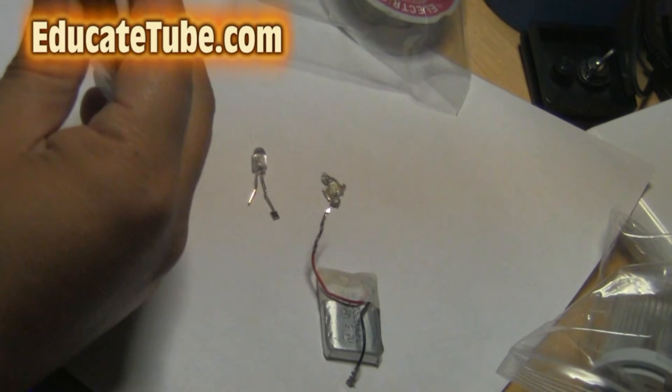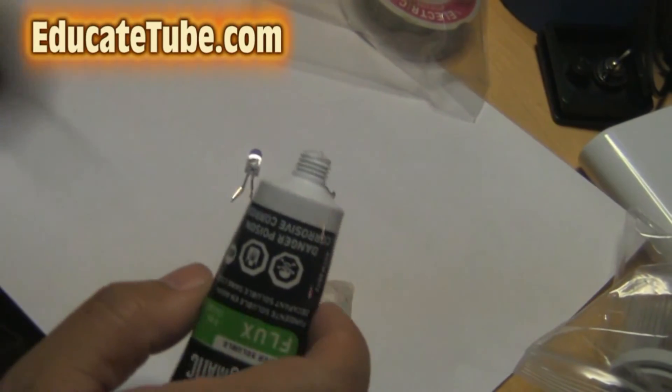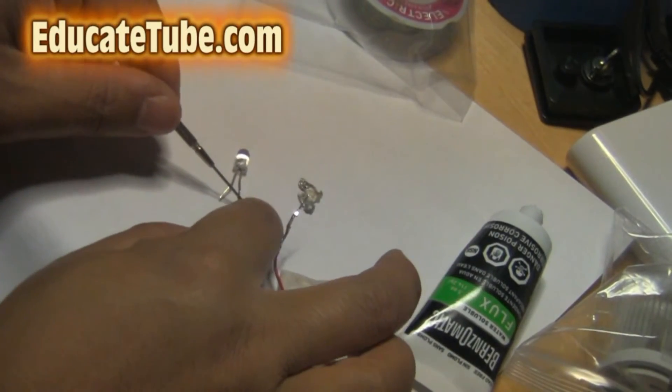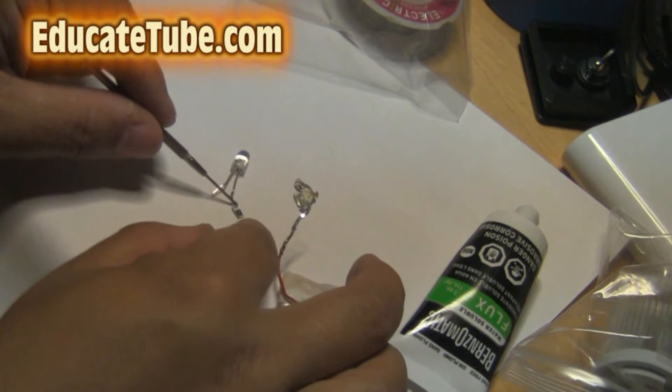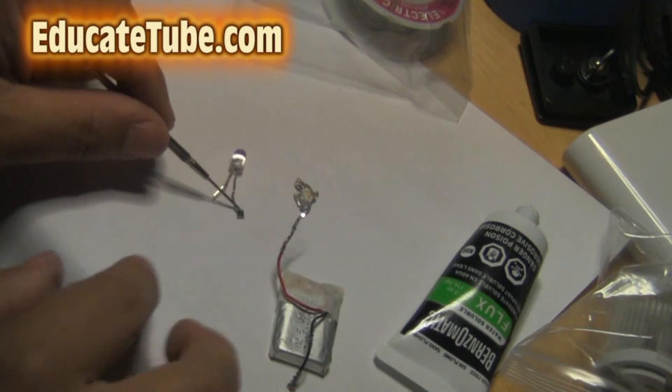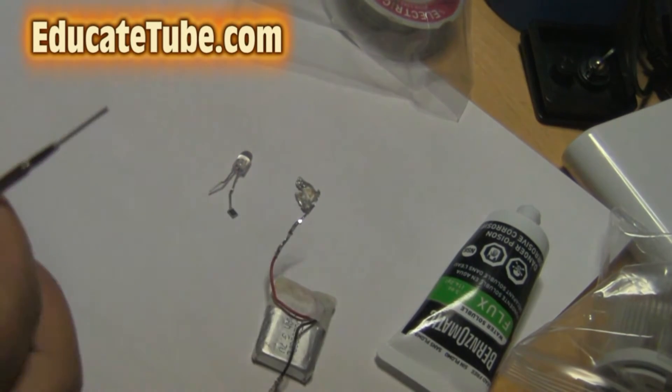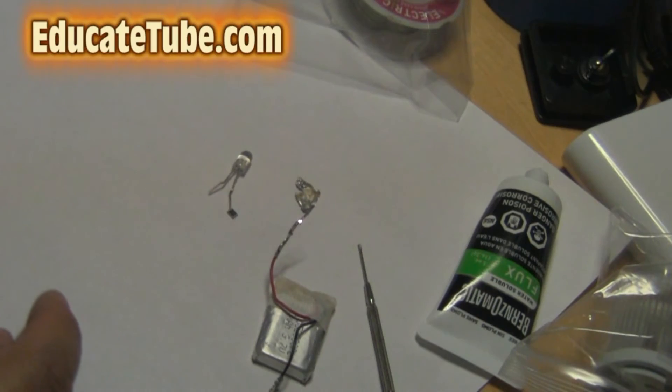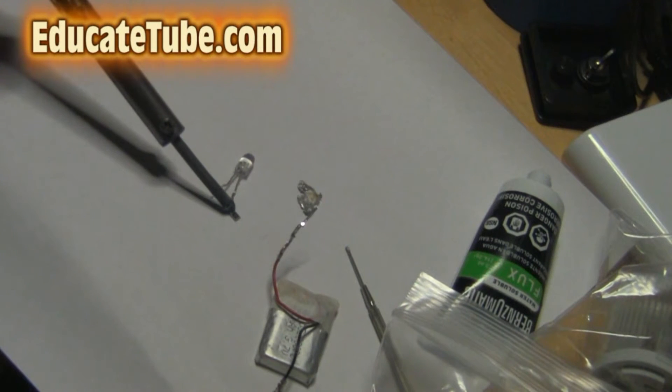So before we start you might want to apply a little bit of flux to the soldering part that you want to solder. Right here is a flux. It's water soluble. I'm going to apply a little bit to the resistor one end and then as well as the end of the positive terminal like this. Because I want the silver solder to just flow in. So let's get the solder. Well first of all let's heat it up. When you put the flux in you should add a bit of heat.